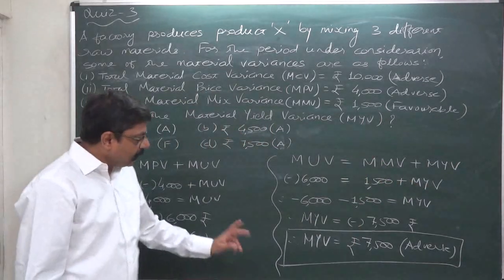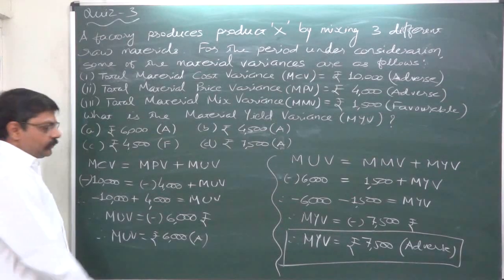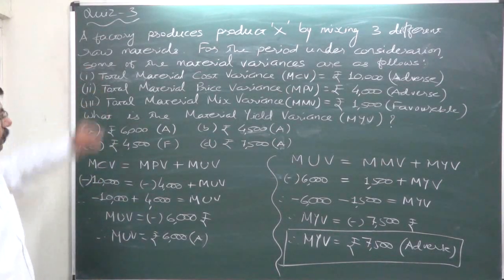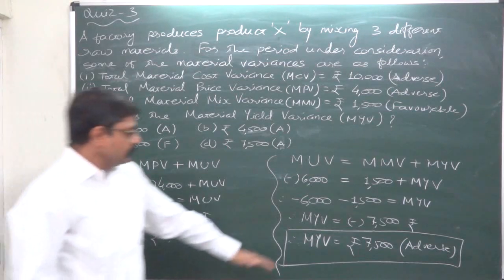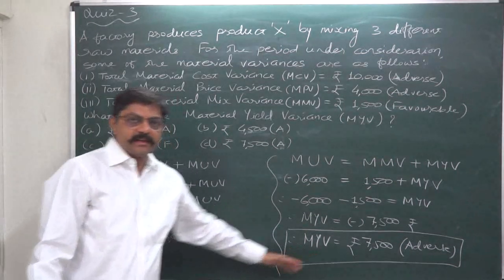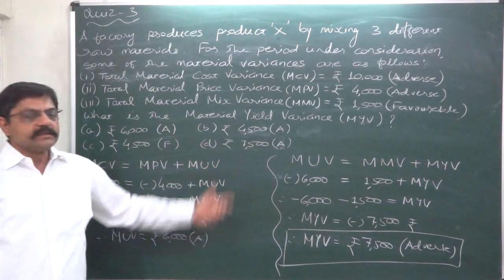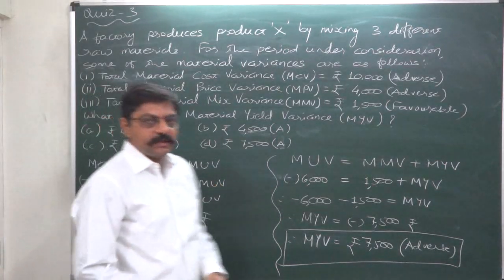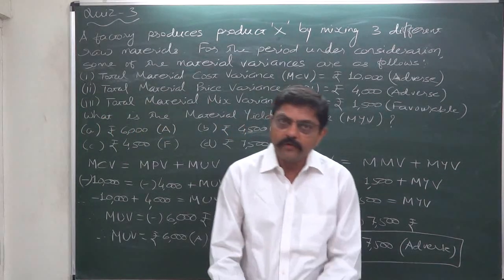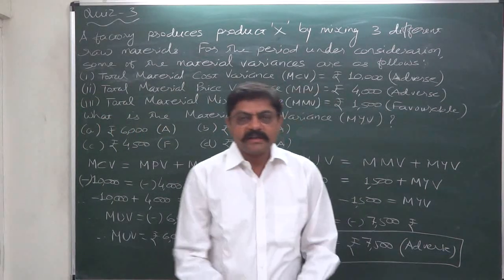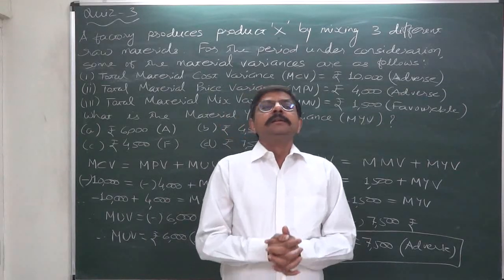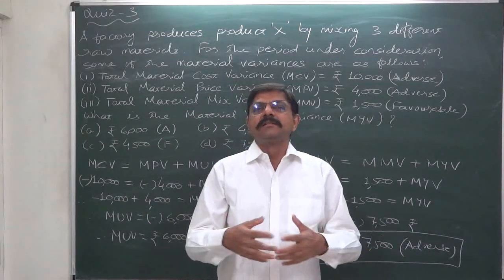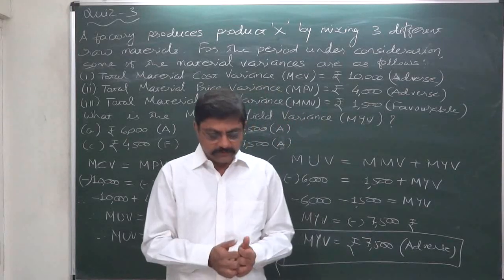So, material usage variance of 6,000 adverse is actually because of 7,500 adverse material yield variance and 1,500 favorable material mix variance — their combined effect is the material usage variance. In this way, for this particular problem, we can find out the material yield variance by using the two reconciliation formulas. I hope this is useful for all of you to understand the basics of material cost variance and all other components of cost variance.